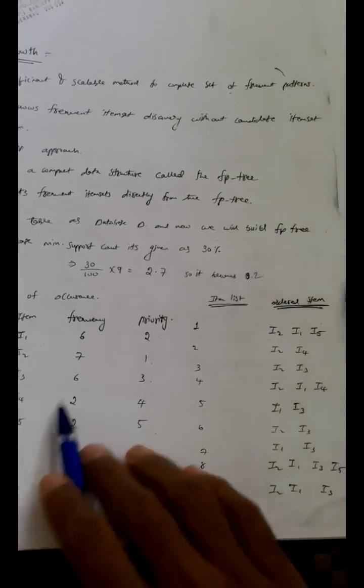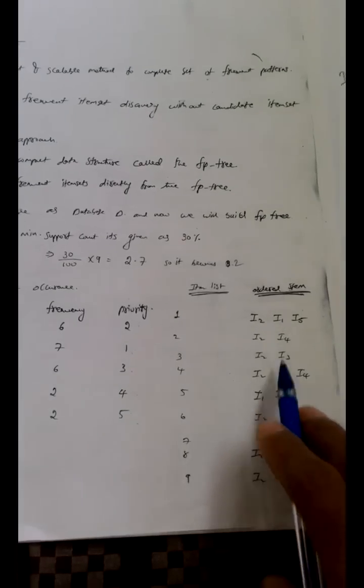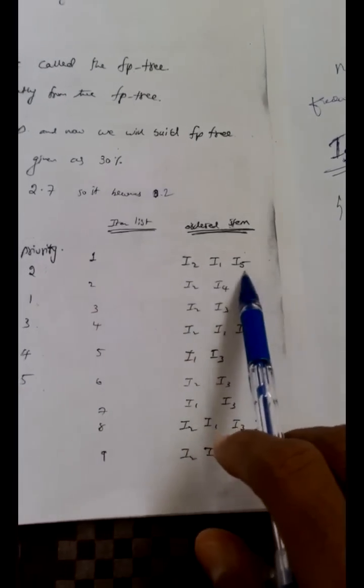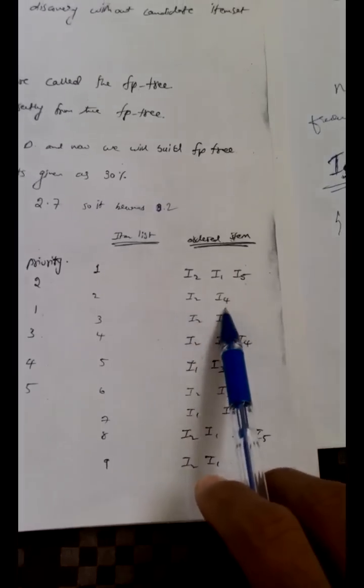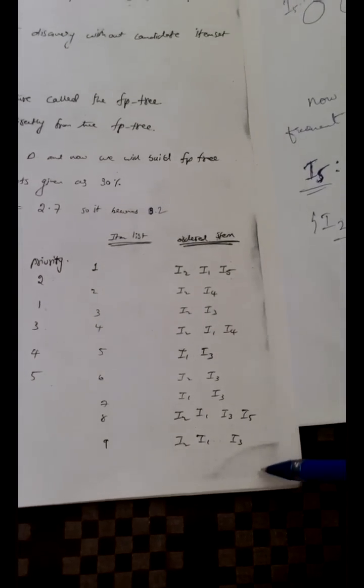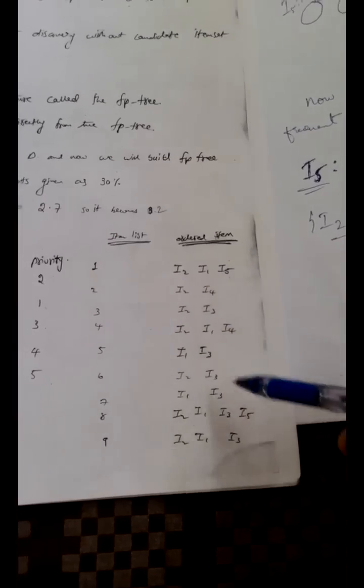Based on these priorities, we reorder the items of each transaction. Previously, transactions might have been ordered as i1, i2, i5, but now since i2 has the highest priority, we reorder all items by priority. So the order becomes i2, i1, i5 — with i2 first. Similarly, i2, i4; i2, i3; and so on. The whole dataset is reordered based on the priority of each item.